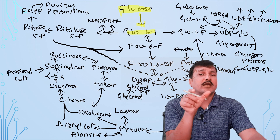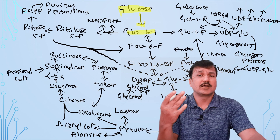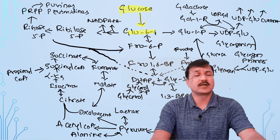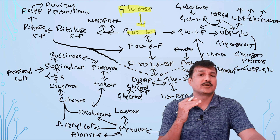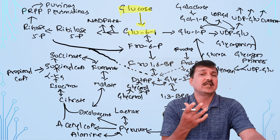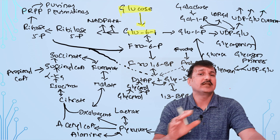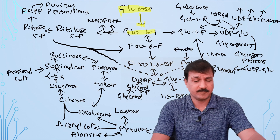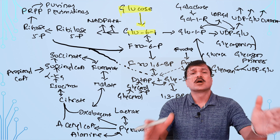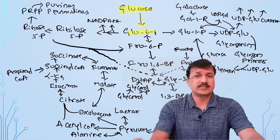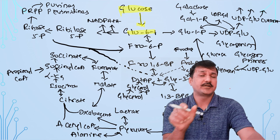Hexokinase, present in extrahepatic tissue, is a low Km and low Vmax enzyme, ensuring tissues get glucose under all blood glucose concentrations. It phosphorylates glucose into glucose-6-phosphate, trapping it inside the cell and committing it to glycolysis. Glucokinase is induced by insulin in the liver, whereas hexokinase is not induced by insulin. Glucokinase is not regulated by glucose-6-phosphate, whereas hexokinase is feedback inhibited by glucose-6-phosphate.